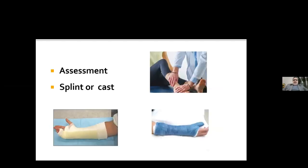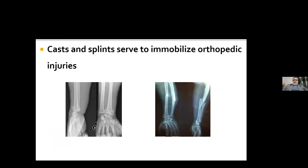Before applying any plaster cast, we have to assess the extremity for displacement of fractures, for any abrasions, wounds, and the neurovascular status. It is very important. If the need is felt to have any plaster, we must decide whether the patient needs a splint or a cast. Casts and splints mainly serve to immobilize orthopedic injuries. The main functions are to align the bone, decrease pain, protect the injury, promote healing, and compensate for surrounding muscle weakness. The main indication is treatment of fractures.